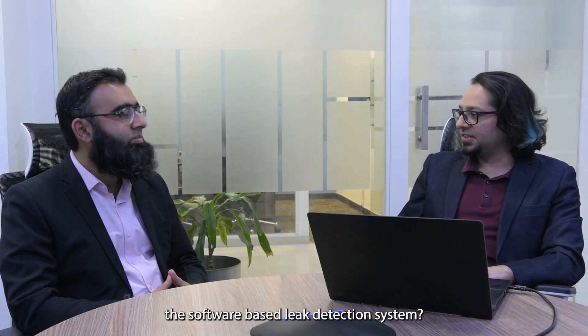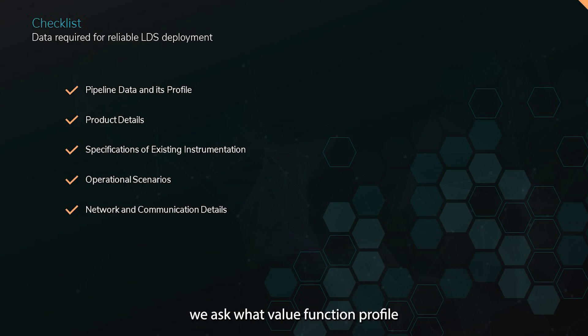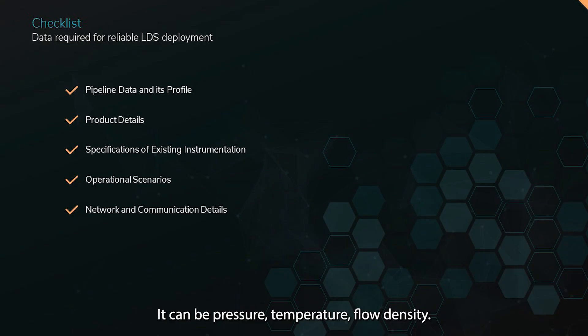What is the minimum infrastructure needed to implement a software-based leak detection system? We ask pipeline operators to share pipeline information including pipeline characteristics — as mentioned, we need that information to build the digital twin — as well as product details, elevation profile, and the existing communication infrastructure. We also assess the accuracy of existing instruments. If the current instruments provide the required level of accuracy, we can proceed with them; otherwise, we propose a new set of highly accurate instruments. These would typically include pressure, temperature, flow, and density instruments — standard process measurement instruments.